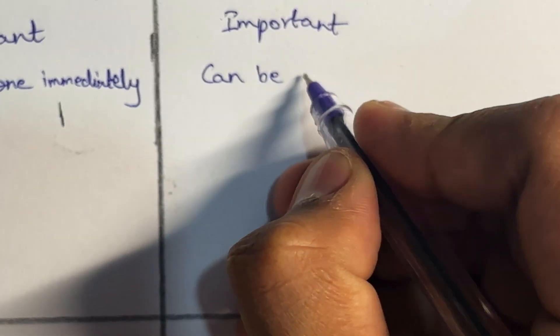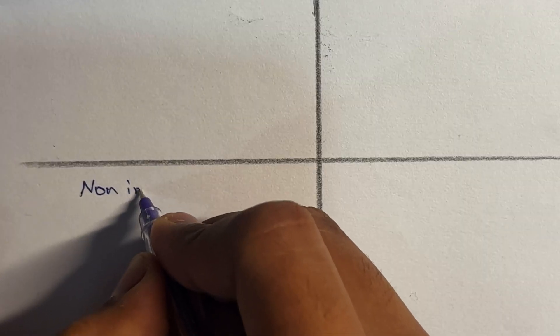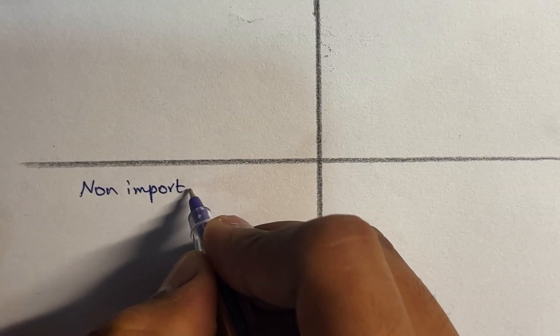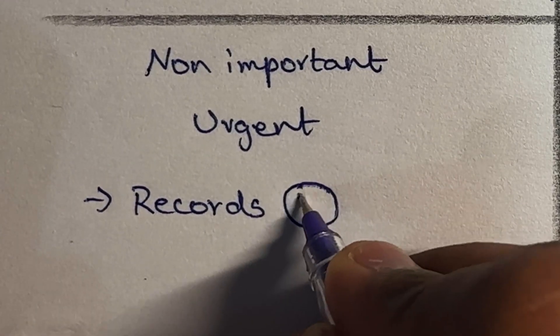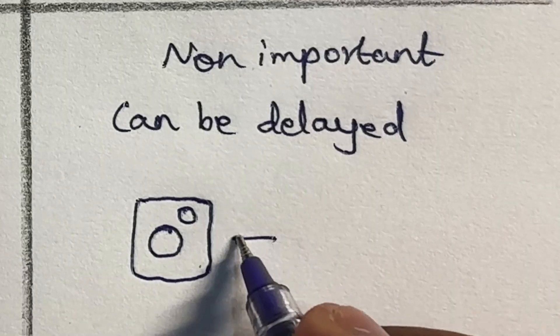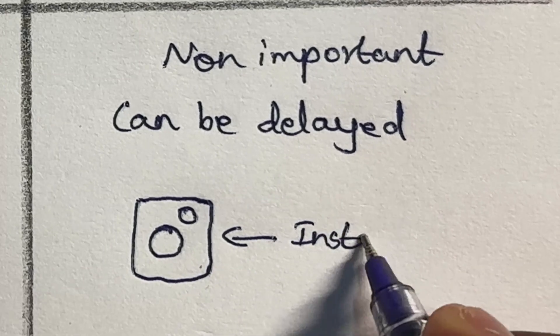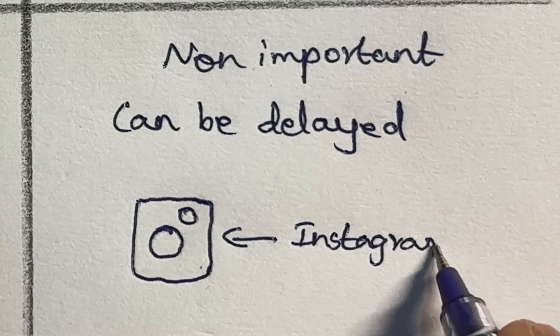The second box will include important tasks which can be delayed — for example, studying for a test which is one month later. The third box is non-important tasks but they have to be done immediately, like doing records, workbooks, problems, or writing classwork — writing work in which you do not actually use your brain. The fourth box includes non-important tasks which can be delayed: scrolling reels, watching Instagram, replying to DMs, watching Netflix and all those fun activities which are wasting your time.